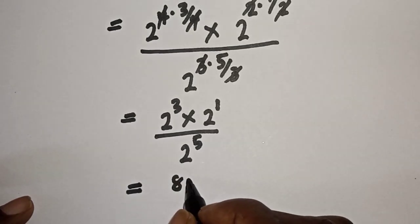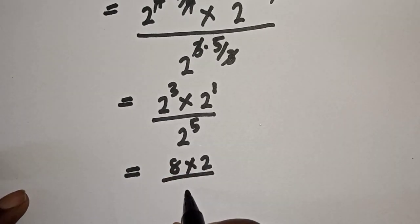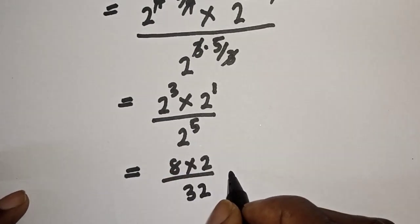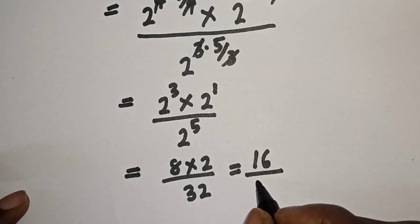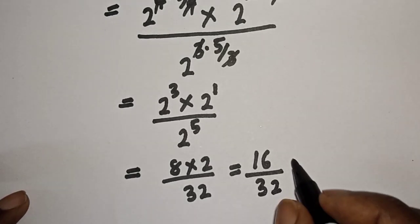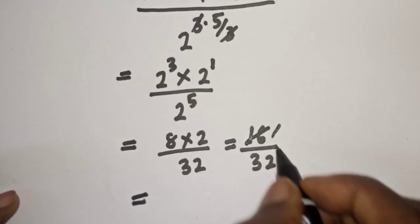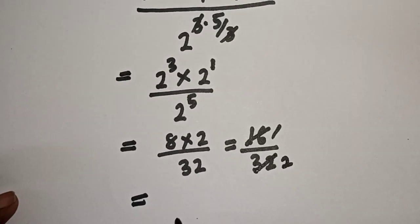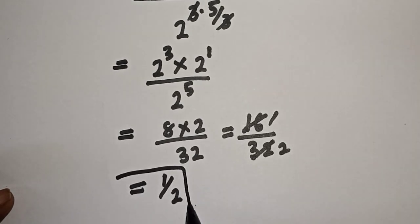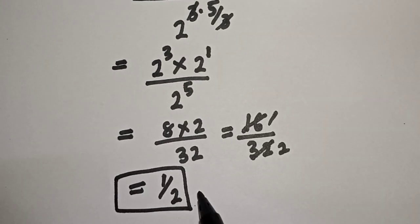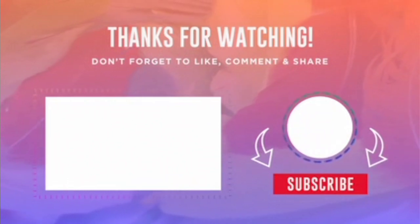This is equal to 2 raised to power 3, which is 8, multiplied by 2 raised to power 1, which is 2, divided by 2 raised to power 5, which is 32. This equals 8 times 2 over 32, which simplifies to 16 over 32, giving a final answer of 1 over 2. If you enjoyed the class, please don't forget to like, share, comment, and subscribe — thank you.